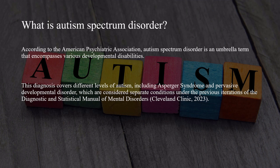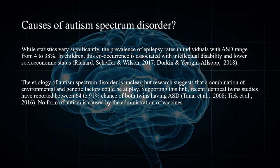According to the American Psychiatric Association, Autism Spectrum Disorder is an umbrella term that encompasses various developmental disabilities. This diagnosis covers different levels of autism including Asperger's Syndrome and Pervasive Developmental Disorder, which are considered separate conditions under previous iterations of the Diagnostic and Statistical Manual of Mental Disorders. The prevalence of epilepsy in individuals with Autism Spectrum Disorder ranges from 4 to 38%, and in children, this co-occurrence is associated with intellectual disability and lower socioeconomic status.